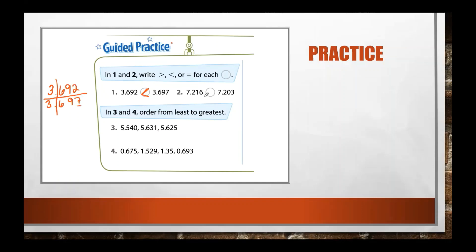Next comparison: seven and two hundred sixteen thousandths, circle for the symbol, and seven and two hundred three thousandths. Writing it out: seven, two hundred sixteen versus seven, two hundred three. The sevens are the same, twos are the same. Then we have one versus zero — one is larger. So we know the larger number has the bigger end of the symbol facing it, and we place the symbol accordingly.